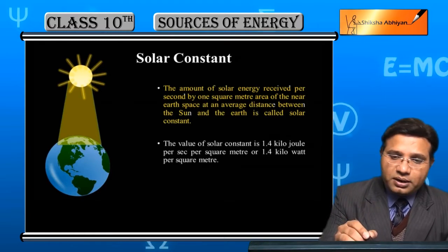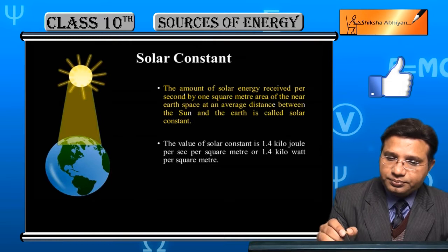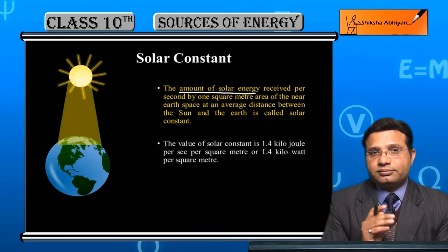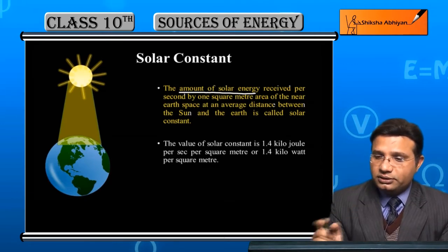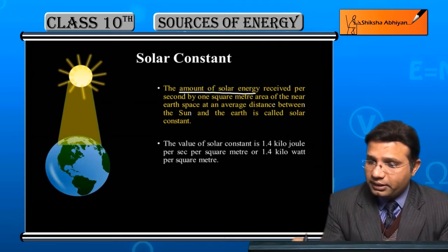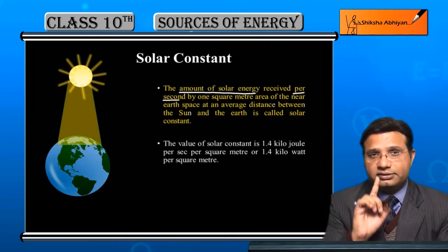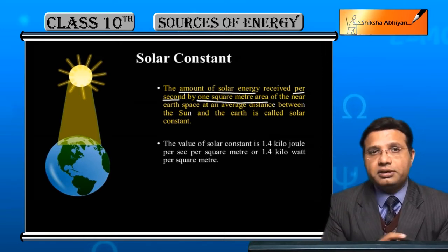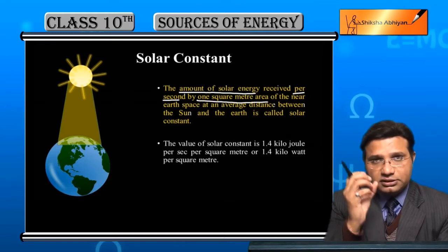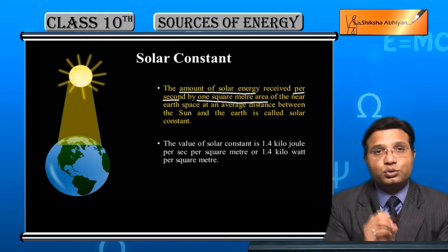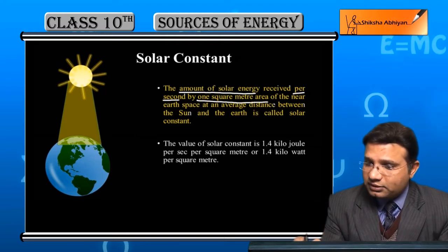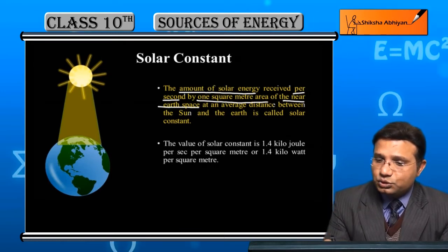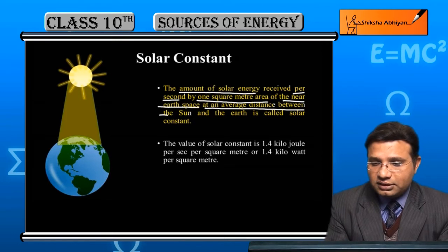Let's understand this in parts. 'Amount of solar energy' — we are finding the quantity of solar energy which is being received on Earth's surface per second, that is, how much is received in one second. And on which area? On one square meter area. How much energy from the sun is incident per second on one square meter area? And the space area taken is exactly near Earth's space.